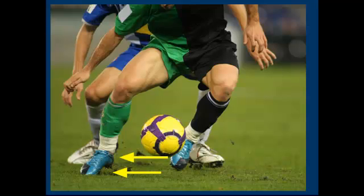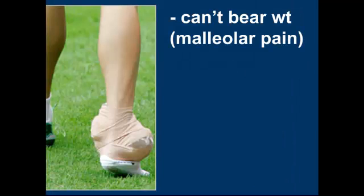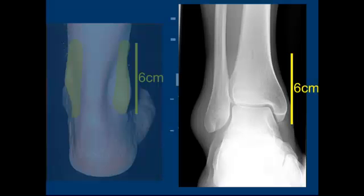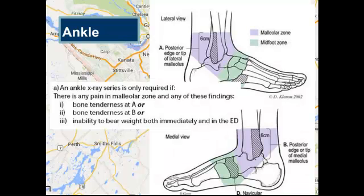Next are the ankle rules. Again, you've already asked the patient if they've been able to bear weight. This is for patients with pain in the malleolar — the ankle area. On exam for the ankle, we're specifically concerned about posterior tenderness to palpation of the lateral malleolus and the medial malleolus. Remember, this is posterior pain in the distal six centimeters. If they meet those criteria, we have to get an x-ray.